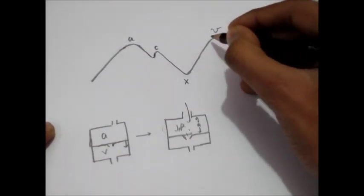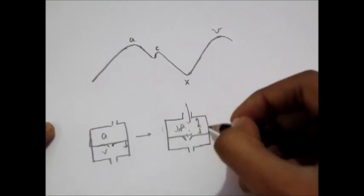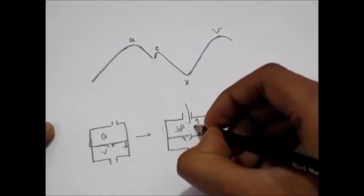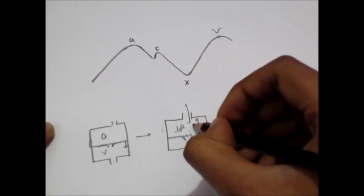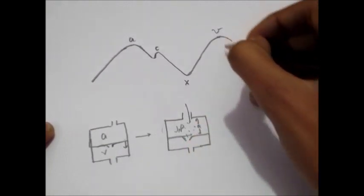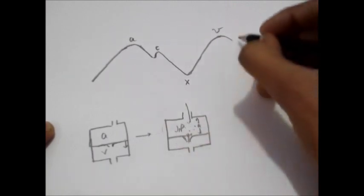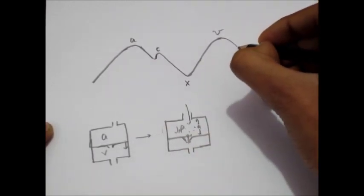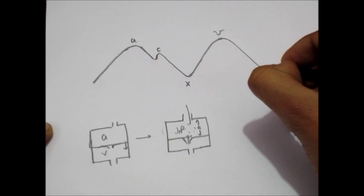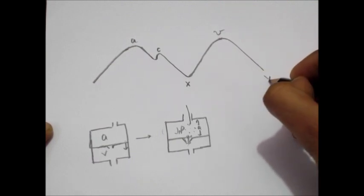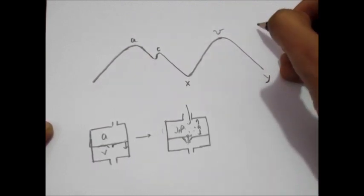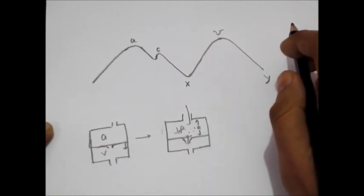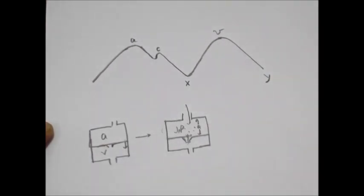After the blood is filled in the right atrium, the pressure of the right atrium increases, the tricuspid valve opens, and the blood is drained into the right ventricle. This leads to the formation of the Y wave, as the pressure decreases due to the flow of blood from the right atrium to the right ventricle.